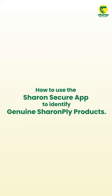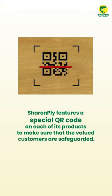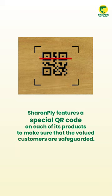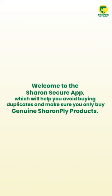Learn how to use the Sharon Secure app to identify genuine Sharon Ply products. Because there are so many fakes of well-known brands, many people purchase plywood and related products that subsequently turn out to be duplicates. Sharon Ply features a special QR code on each of its products to safeguard valued customers. Welcome to the Sharon Secure app, which will help you avoid buying duplicates and ensure you only buy genuine Sharon Ply products.